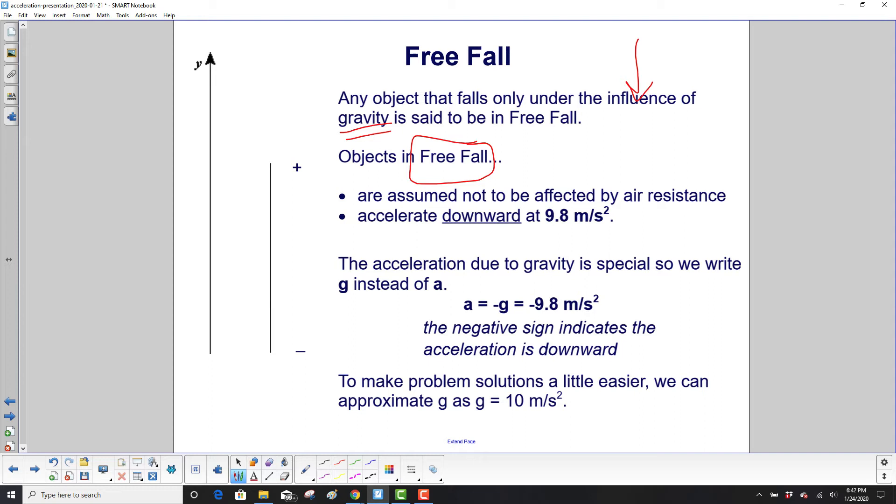The acceleration due to the gravitational force is so special, we write g for gravity instead of a. And our acceleration will be negative g. g is always a positive number, but the negative tells you that the acceleration is downward. So the acceleration due to gravity is negative 9.8 meters per second squared. To make problem solutions a little easier, we can approximate g as g equals 10 meters per second squared, but that's just an approximation to make the problem simpler.